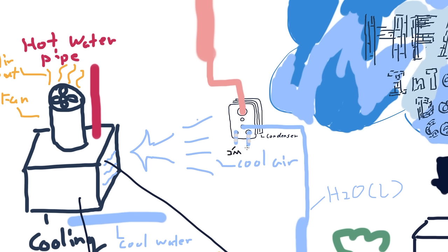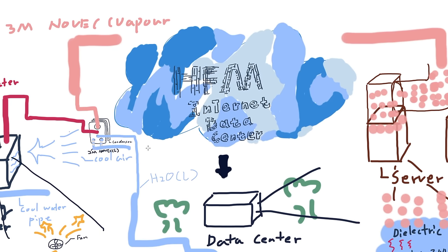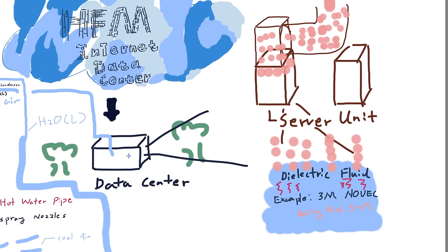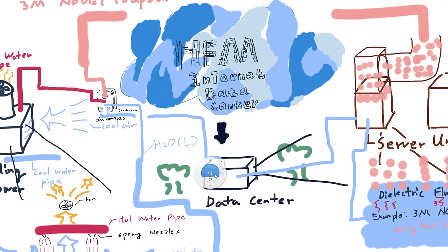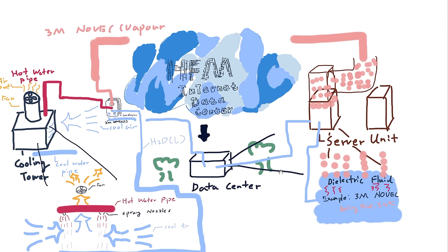The heated water will be returned to the cooling tower, and the 3M Novec in liquid state will be returned to the data center to compensate for the vaporized 3M Novec and complete a sustained system.